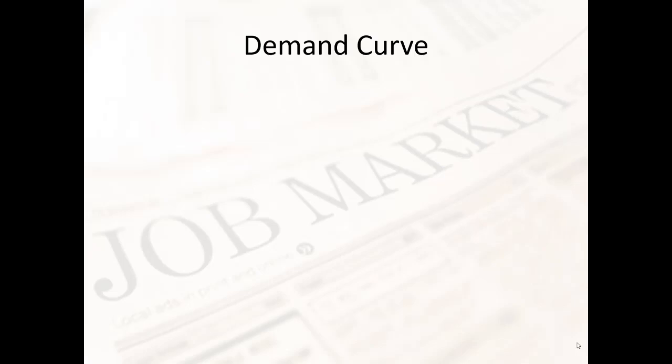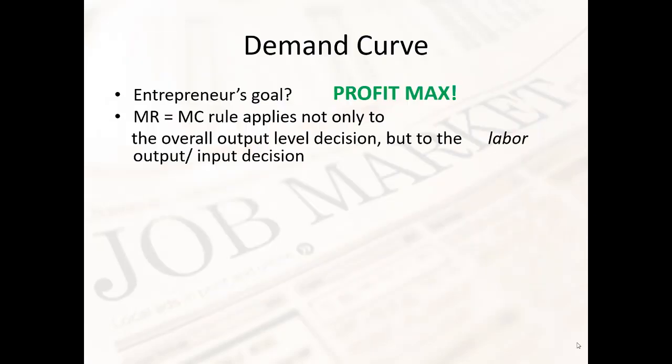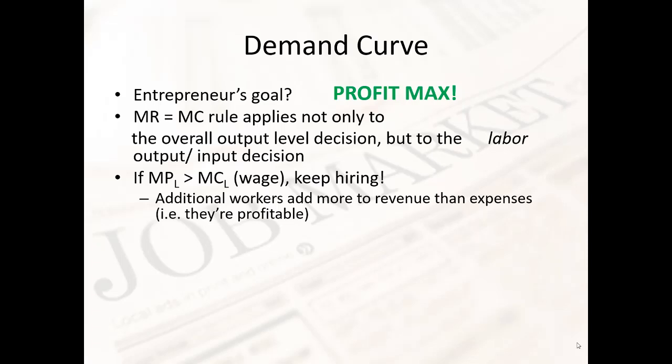Let's go into more detail about the demand curve for labor from the perspective of businesses hiring workers. The entrepreneur's goal is to maximize profit. Remember the profit max rule: MC equals MR. That applies to the overall output level decision and also to the labor input decision. The marginal product of labor is how much extra product hiring an extra worker gets you — sometimes called marginal value product. If the marginal product of labor is greater than the marginal cost of that worker, or the wage, you'll keep on hiring, because hiring extra workers gives you more revenue than it costs in wages. Additional workers add more to revenue than expenses.